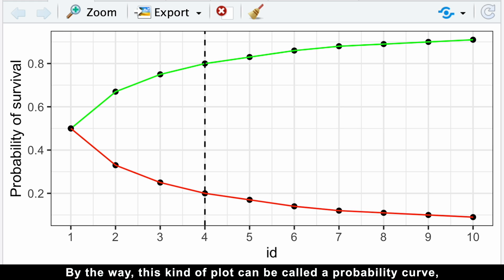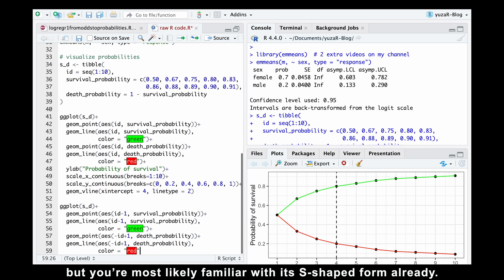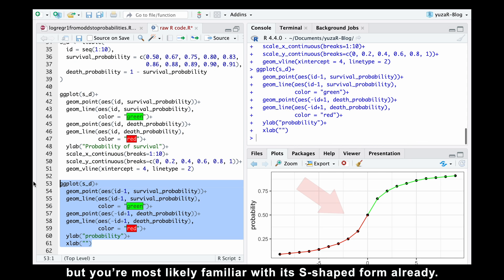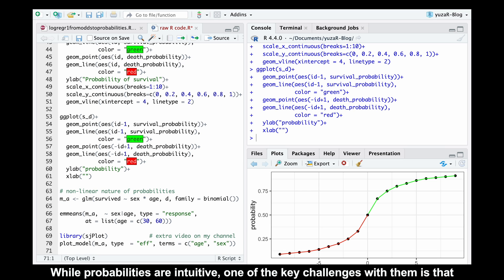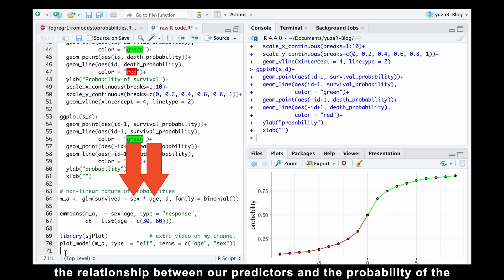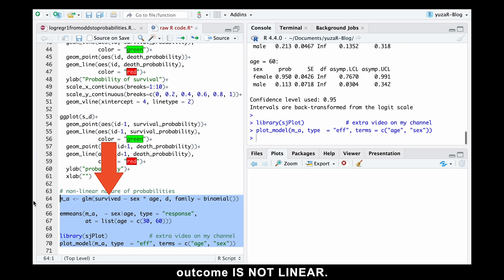By the way, this kind of plot can be called a probability curve, but you're most likely familiar with its S-shaped form already. While probabilities are intuitive, one of the key challenges with them is that the relationship between our predictors and the probability of the outcome is not linear.